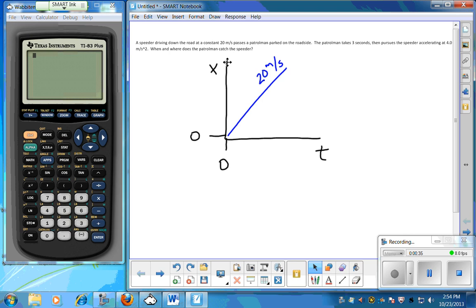And then our patrolman, it takes him three seconds after the passing. So when the clock says three seconds, then he is going to accelerate. We're looking for where those two lines intersect each other. So we know it's a when and where do they meet problem, and we know that we're looking for the intersection of those two lines.